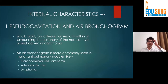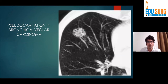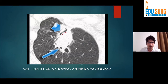Coming to internal characteristics, the first thing we discuss is pseudocavitation or air bronchograms. Small focal low-attenuation regions within or at the periphery of a lesion are known as pseudocavitation or air bronchograms. These are generally seen in bronchioloalveolar carcinoma, but can also be seen in adenocarcinomas and lymphoma. These are areas of cavitation in a bronchioloalveolar carcinoma. This is a dense nodule at the periphery of which we have an area of air bronchogram, which turned out to be a malignant lesion.